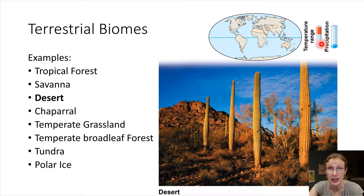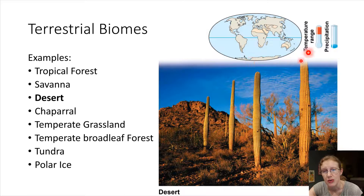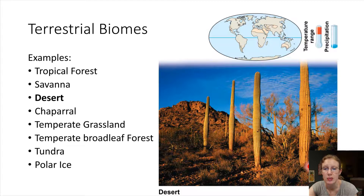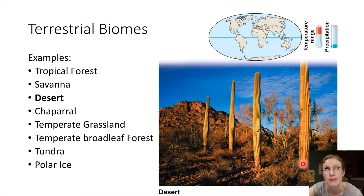Deserts are the driest of all biomes. They can be very hot or fairly cold depending on location, but what they all have in common is very low precipitation. Vegetation tends to be plants good at storing water — cacti are a great example. Wildlife includes lots of snakes, lizards, rodents that eat seeds, and arthropods.